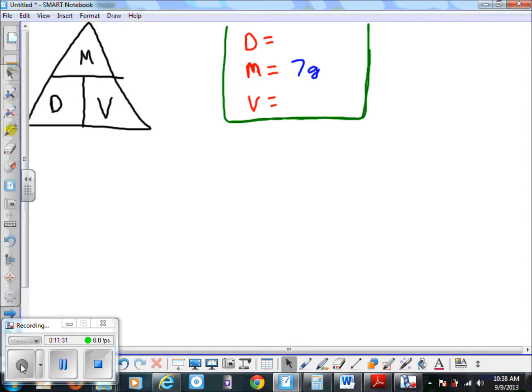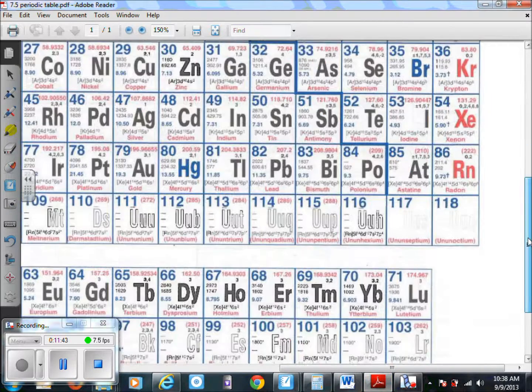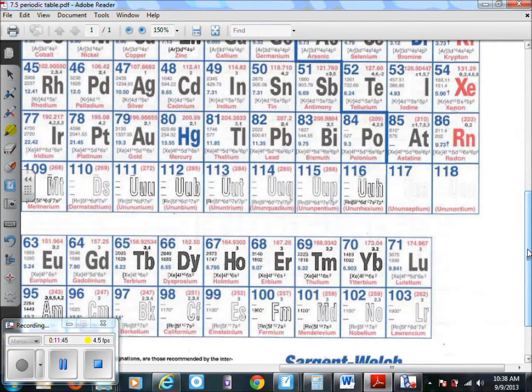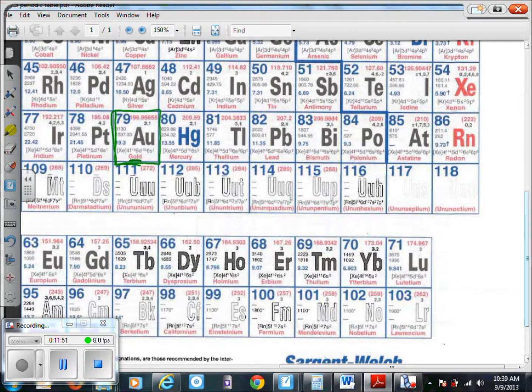So we go back to our chart, and gold is Au. You're going to have to look around on this chart - that's part of what you need to do, is become familiar with it. Here's gold right here. You can see it's gold, and it says that the density of gold is 19.3.